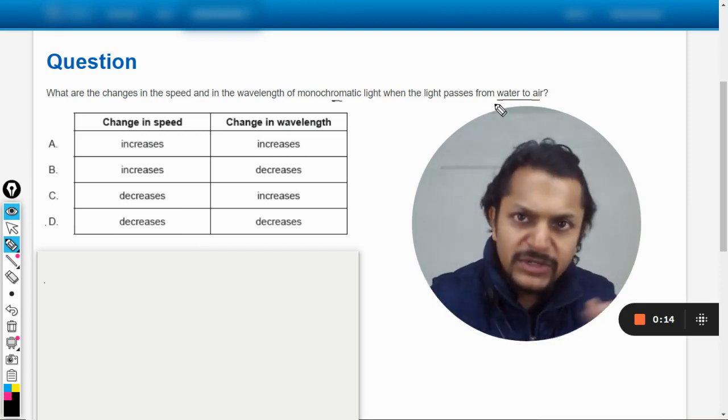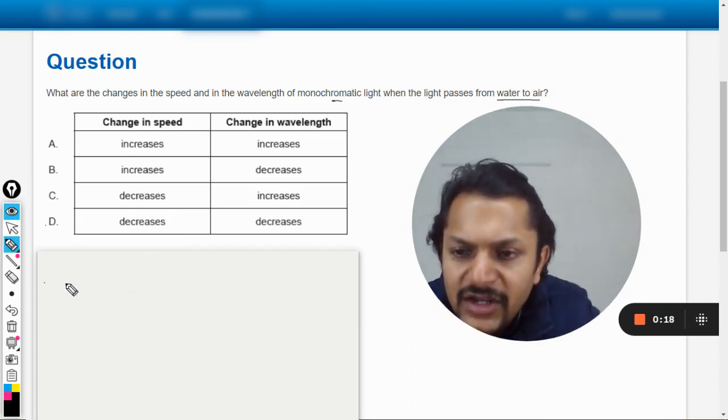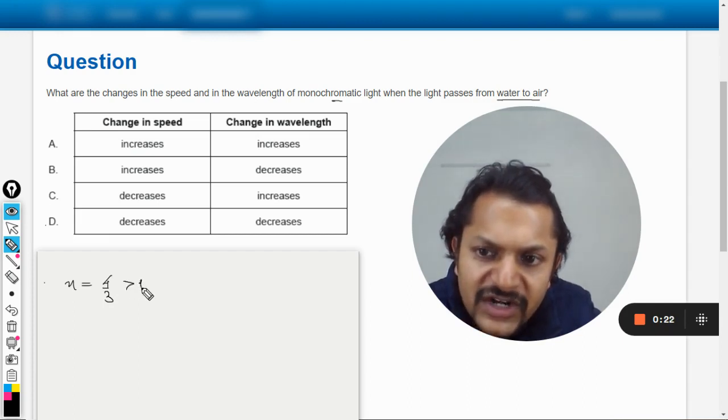Like one medium is denser, one medium is rare. So in the case of water, we know that refractive index is given by 4 by 3, which is greater than 1. Now what does this actually mean?